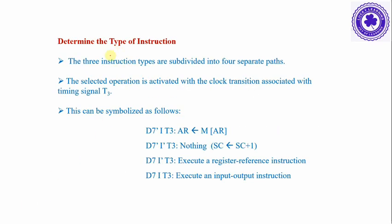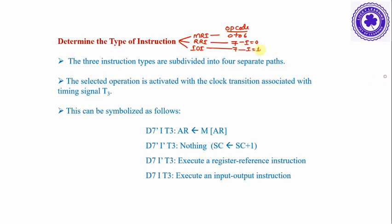Once decoding is done, it determines the type of instruction. There are three types: memory reference instructions, register reference instructions, and input-output instructions. These are decided based on the opcode value — opcodes 0 to 6 are for memory reference instructions. For register reference and input-output instructions, the opcode is 7, but the I bit distinguishes them: I bit 0 for register reference, I bit 1 for input-output.